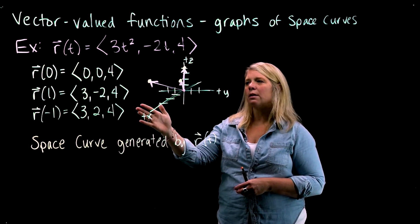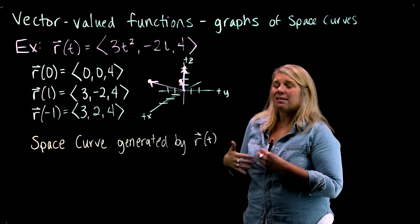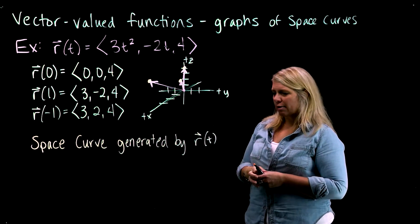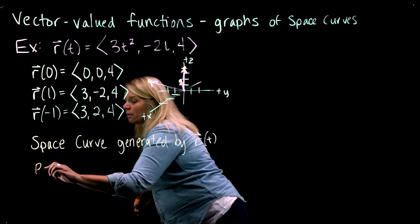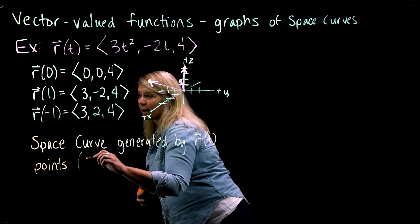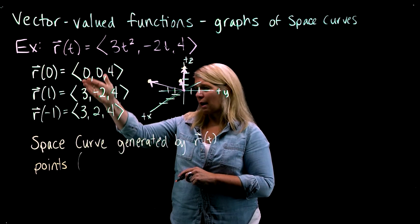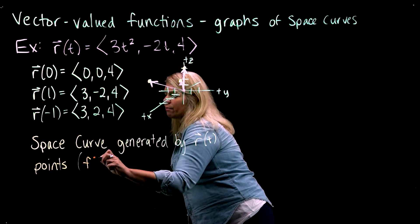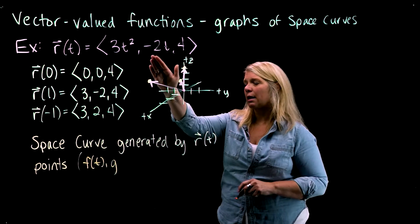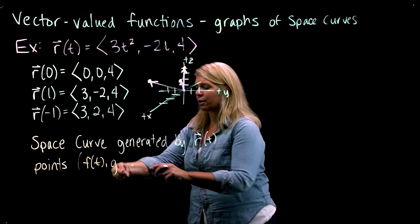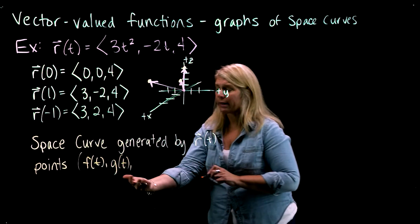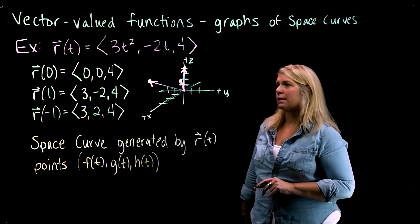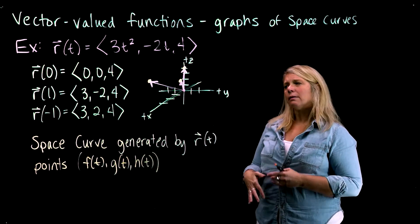So this notation indicates vectors, but I've also got terminal points that have the same numbers as the coordinates of that terminal point of these vectors here. So a space curve generated by R of T would be the set of all points, and they're the terminal points of these vectors. But notice that the x-coordinate of the point comes from the i-component of the vector, which would come from this f of T function here. And then the g of T, the second component function, generates the j-component of the vector, or the y-coordinate of the point. And then this last one, in this case 4,